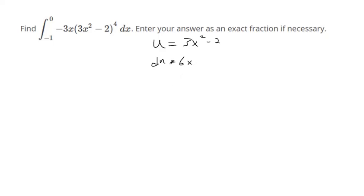then du is going to be 6x. So we want to change it to make it simpler. We want to change it to be in terms of u, but that means we need to have both these pieces. We need to have a 6x in there as well as the 3x squared minus 2. We've got this part substituted. We almost have 6x. We just need this negative 3 to be a positive 6.